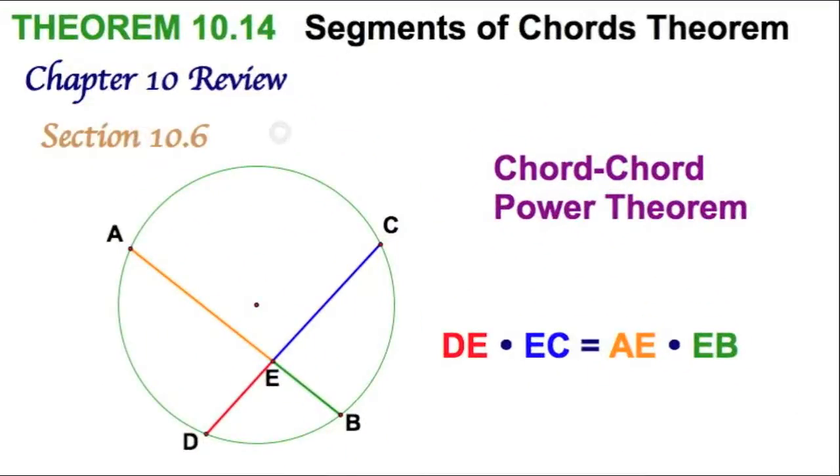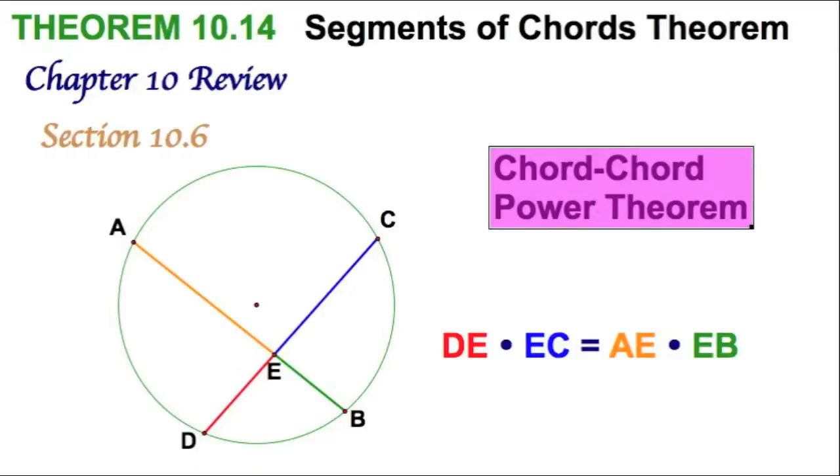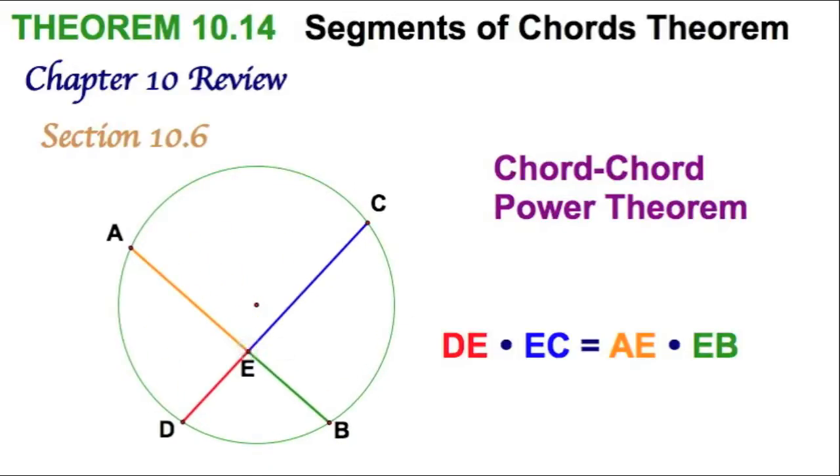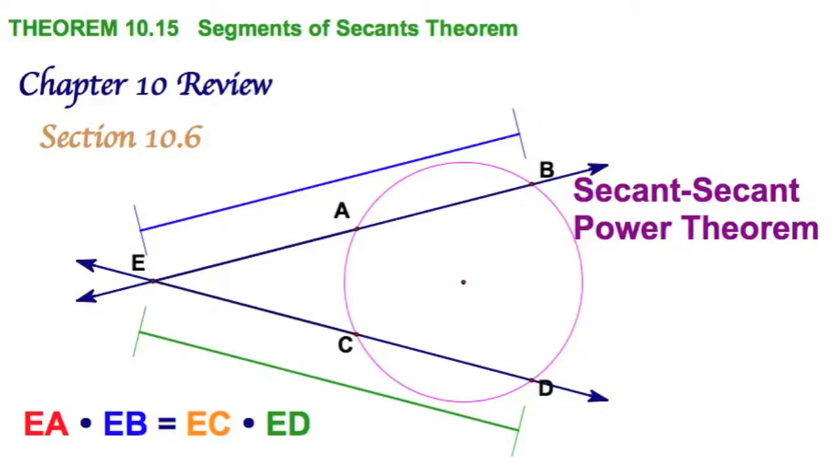Now in section 10.6, unlike 10.5, we're not looking at angle measures - we're looking at lengths of segments. Remember, we call these the power theorems. Your text doesn't, but we do. So remember, the two chords. Well the two chords, if they cross each other, they're going to split each other into two pieces. Red times blue equals orange times green. Well here we have two secants intersecting at E. And the secant-secant power theorem says this exterior segment times the entire secant segment equals the orange times the green. And the tricky part here is you're not always given this and this. So it might be red times parentheses red plus chord is equal to orange times parentheses orange plus gray.